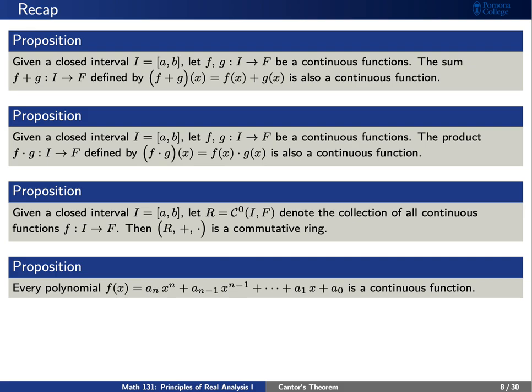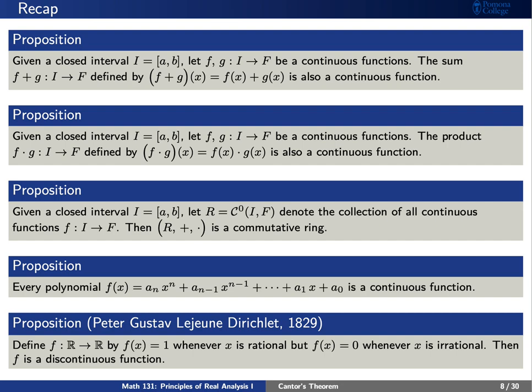And finally, there is an example of a function that is discontinuous everywhere. This was an example generated by Dirichlet. It says: let f(x) = 1 whenever x is rational and 0 whenever x is irrational. Then this function is discontinuous for every real number p. Today we're going to move in a completely different direction, but still using the concept of sequences and series that we've been discussing all along.